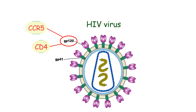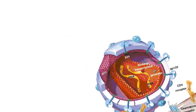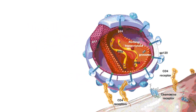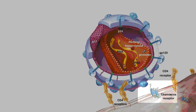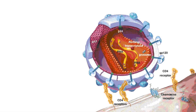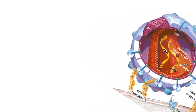It is the gp120 protein that binds with CD4 and the chemokine receptor CCR5 on human cells, allowing HIV to enter human cells. When binding of both the CD4 and CCR5 receptors occurs, gp41 is able to cross the host cell membrane and bind with internal host cell proteins.